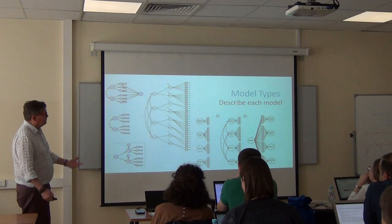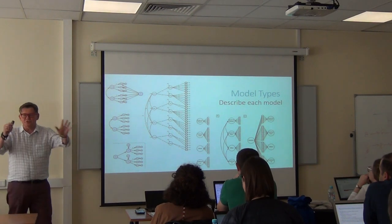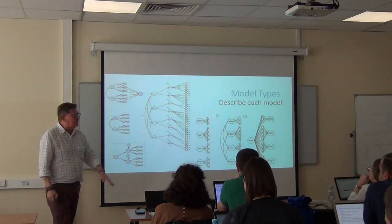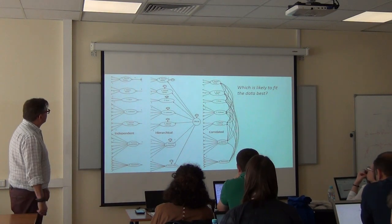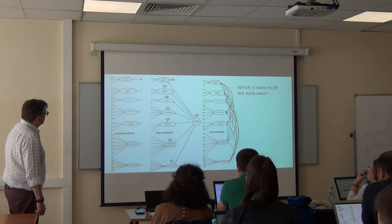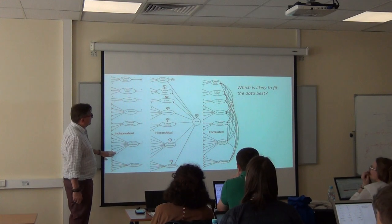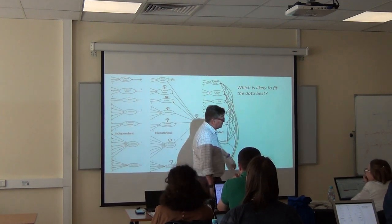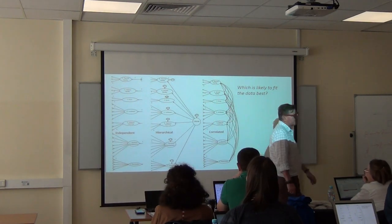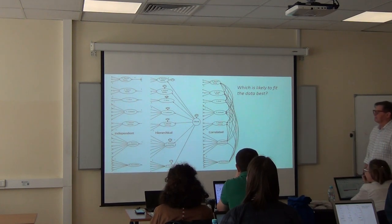So: (b) correlated, (c) bi-factor, (d) five-factor — the logic is easy to see and understand. Independent factors, hierarchical factors, correlated factors — which one do you think is going to fit the data best? Correlated. Yes, because you're absorbing all the variance and allowing them to exist simultaneously.